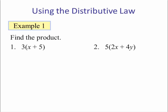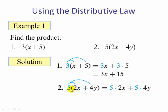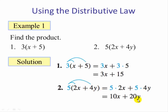Example one — find the product. Number one: we have three times the quantity x plus five. We distribute the three over the x and over the five, giving us three x plus fifteen. Number two: distribute five — five times two x is ten x, plus five times four y, which is twenty y.